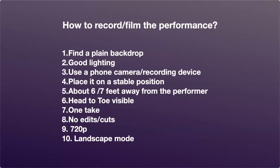How to record or film the performance? First, find a plain backdrop. Then make sure you have good or adequate lighting. You need a recording device — most phone cameras are now capable of recording 720p and above. Find a stable position; you can use a tripod, or if you don't have one, stack books on a table to place it stably. Be at least six or seven feet away from the performer so that from the waist up to the head is visible — head to toe is also fine. All four songs should be performed in one take with no edits or cuts. The minimum recording quality should be 720p; it's not advisable to record above 1080p as the file size becomes too large to upload. Lastly, it's preferable to shoot in landscape mode.